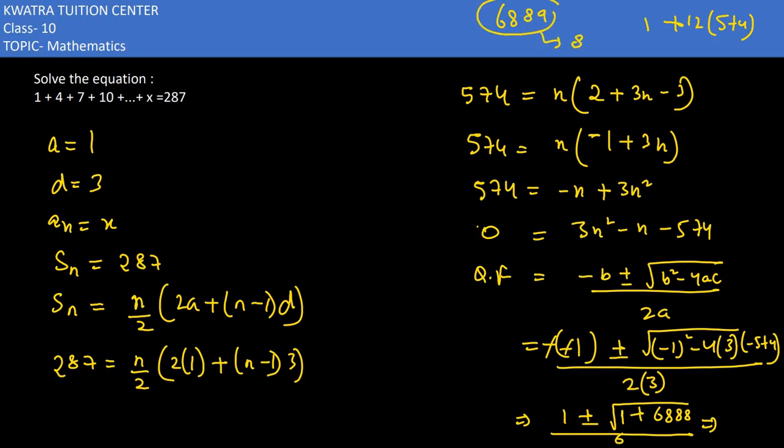Square root of 6889 is 83. So we get 1 plus minus 83 over 6. From this equation we have 2 values: 1 plus 83 over 6, and 1 minus 83 over 6. 1 minus 83 over 6 is neglected because n cannot be negative.